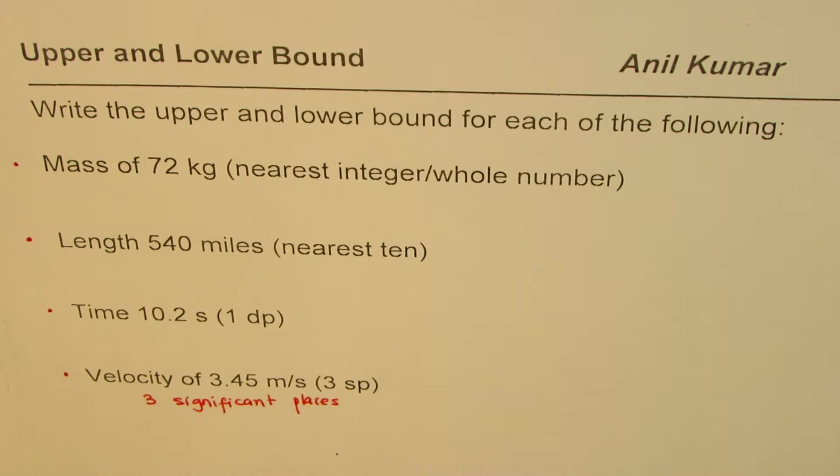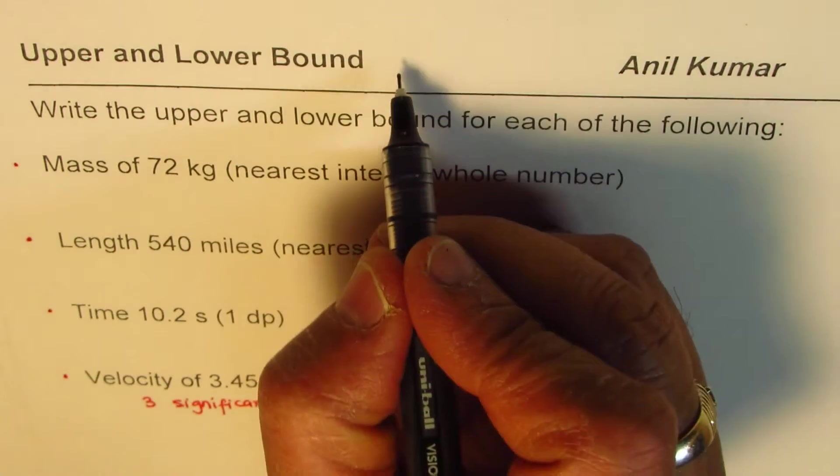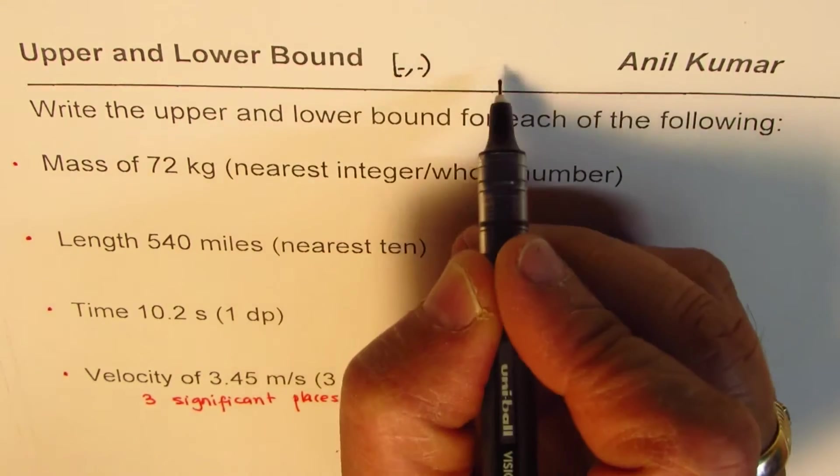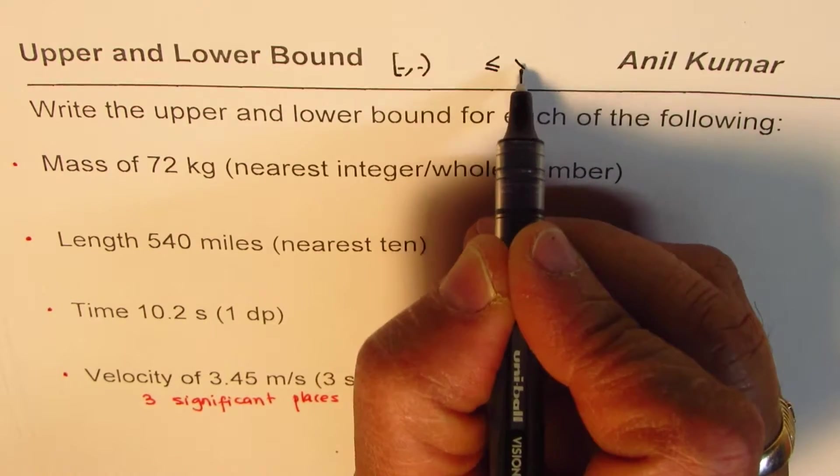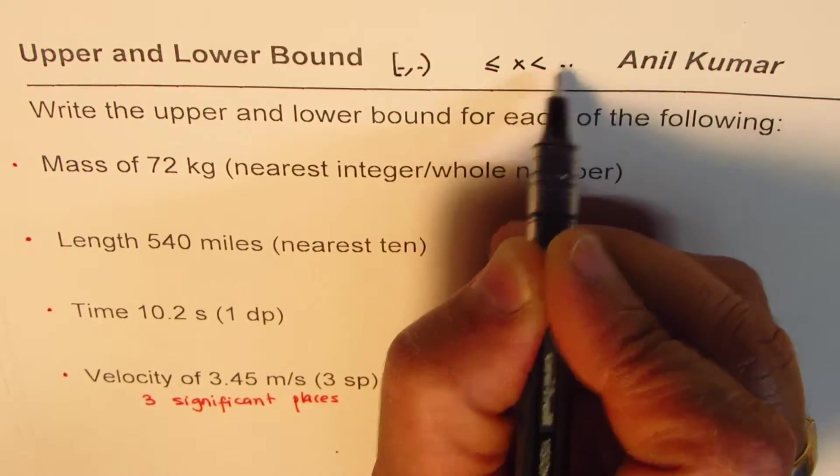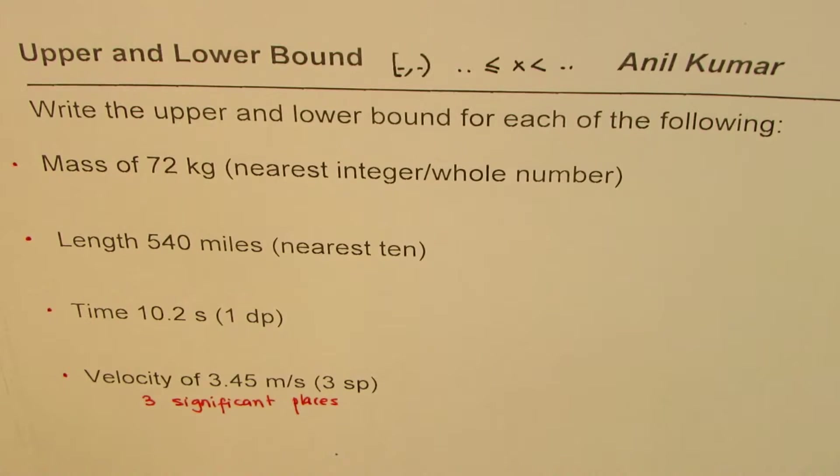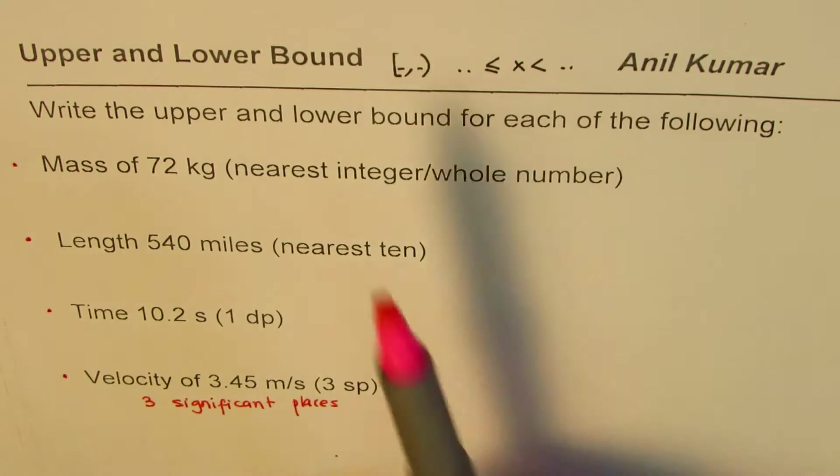Now let's see how to write their upper and lower bounds. We have different nomenclatures. We use brackets kind of like this, so this is one way of doing it. The other way is we are using inequalities, kind of like this. These are two different ways. Third, we can always write lower bound and upper bound. These are different nomenclatures.